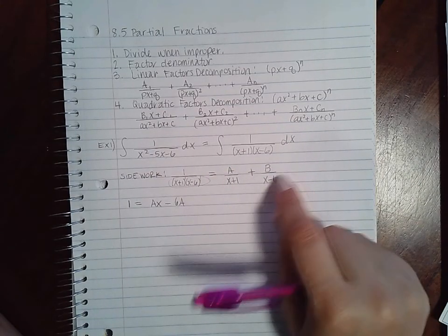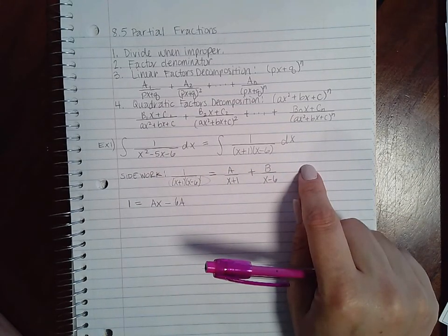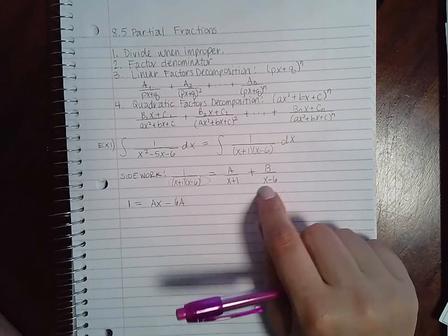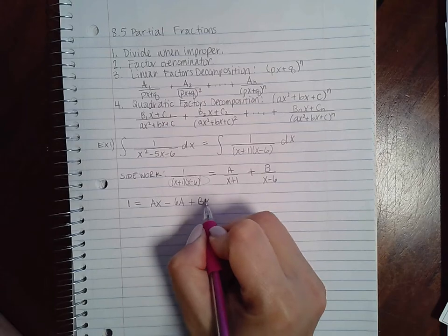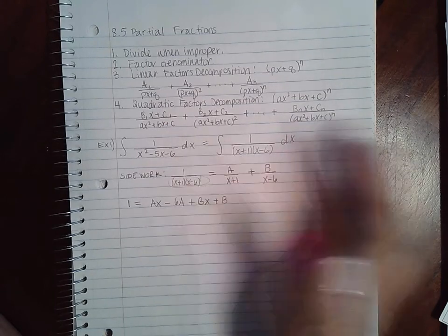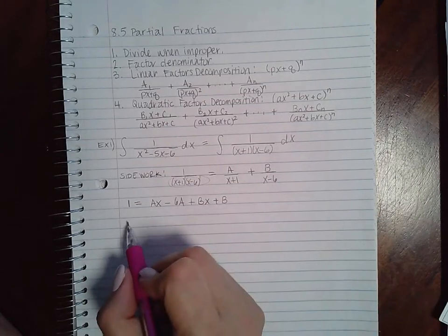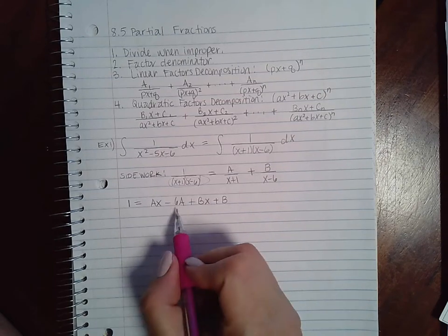And then same thing here: the x minus six terms will factor, the factors will cancel, and I'll end up with b times x plus one, which will give me bx plus b.